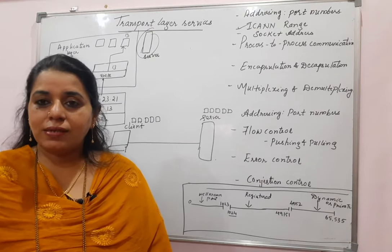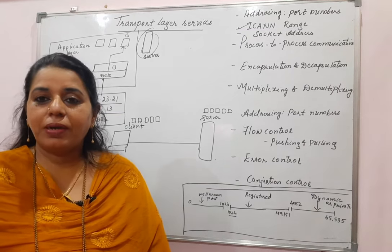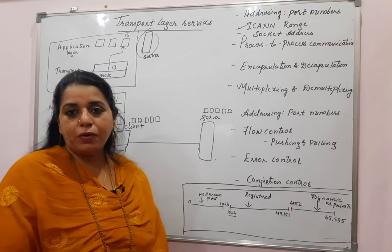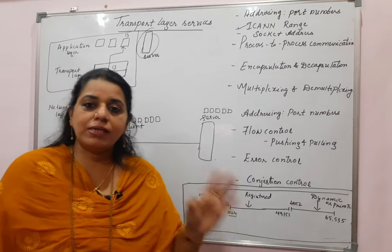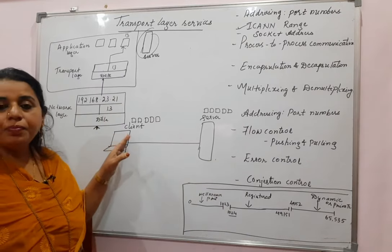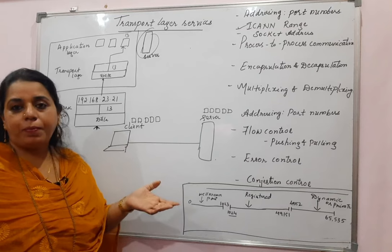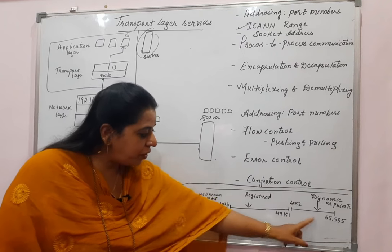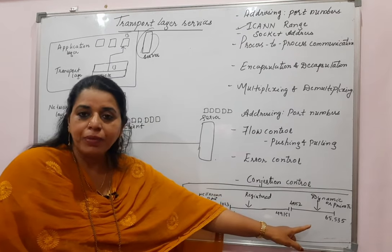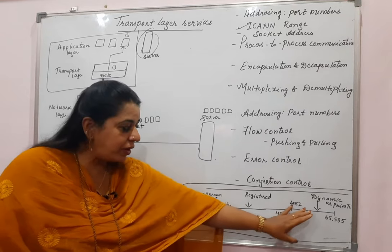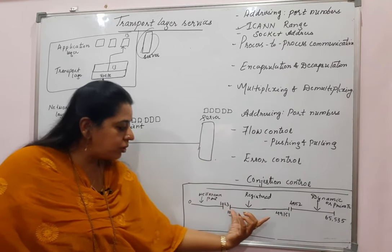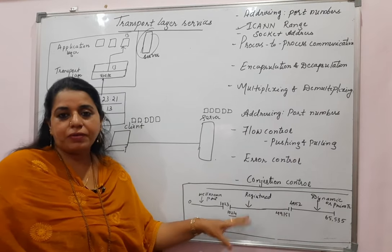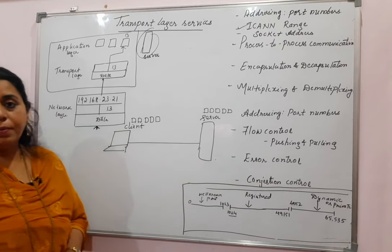At the client side, whatever processes are running are very temporary, so those processes have port numbers from the range 49,152 to 65,535. These are called private or dynamic port numbers. Whereas if you want to use port numbers between 1024 to 49,151, those are called registered port numbers — they must first be registered before use.